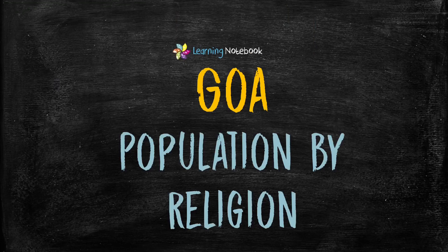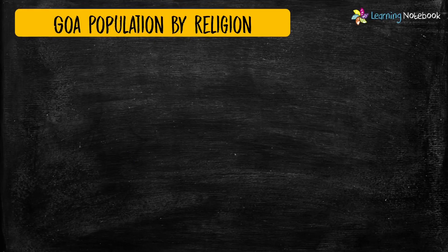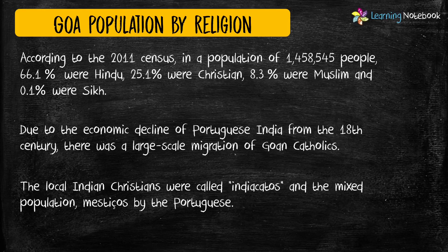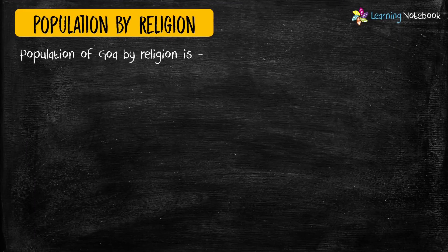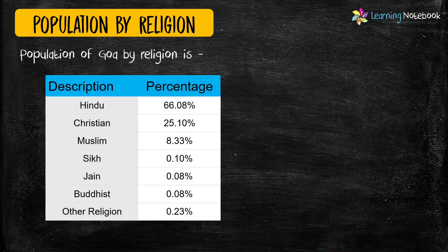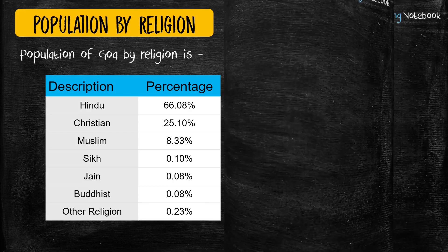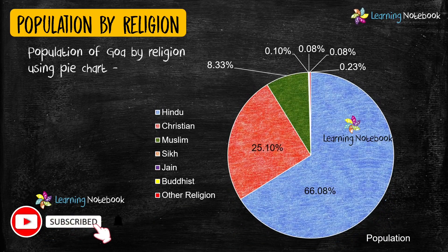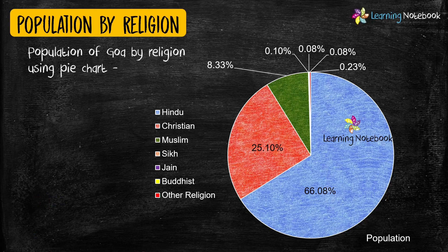You can also include population of Goa by religion in your maths art integrated project. A pie chart is another beautiful way to represent the given data, so you may take help of a pie chart to represent population of Goa by religion.